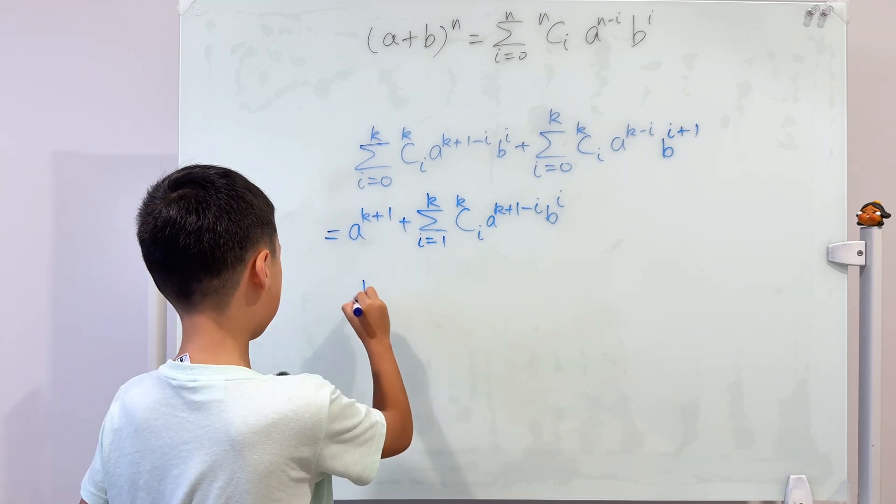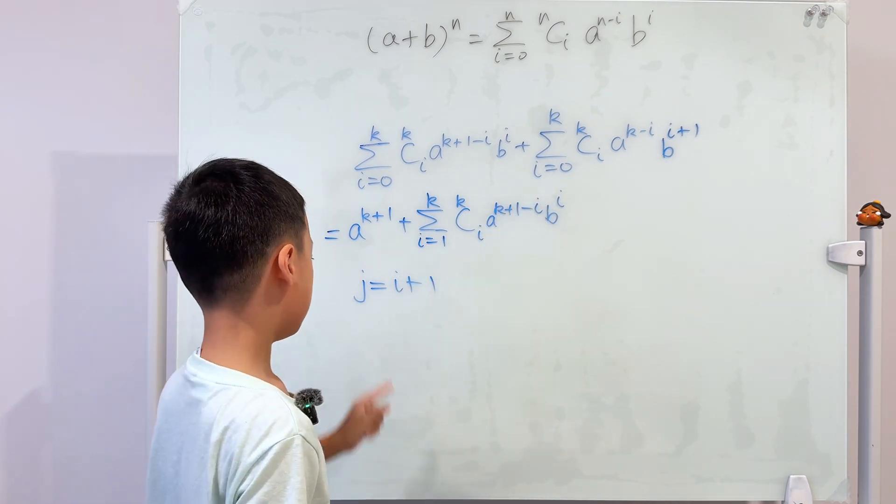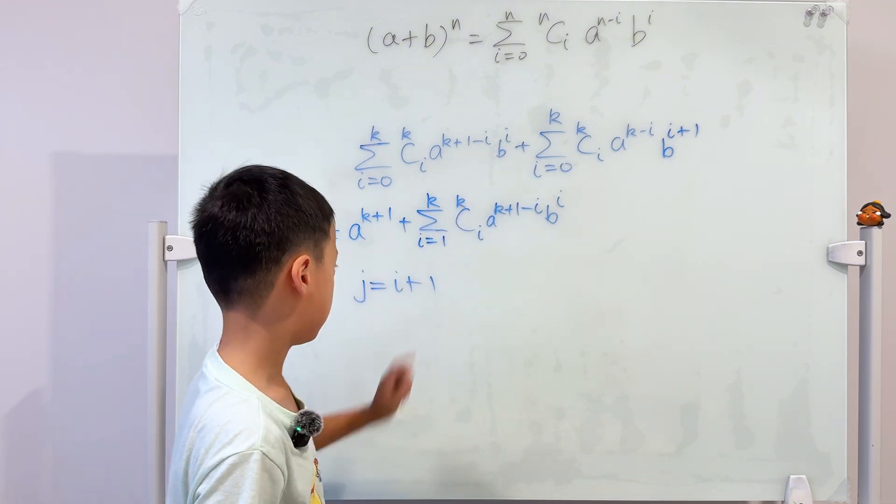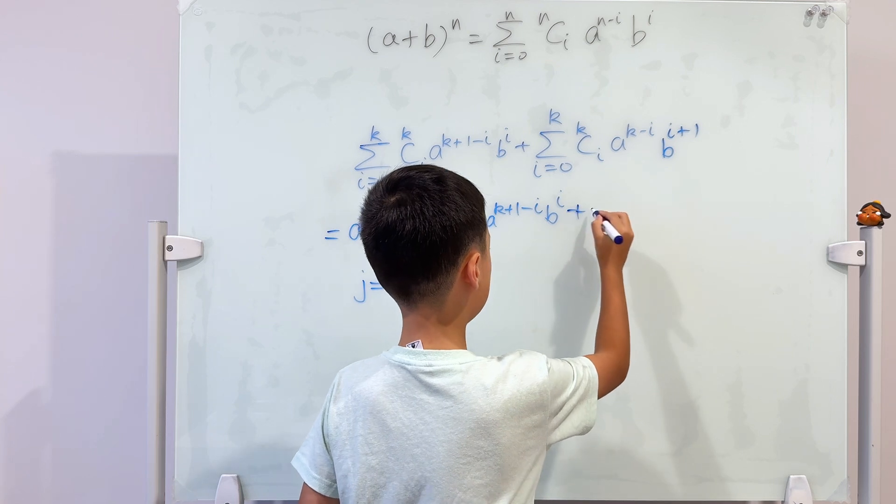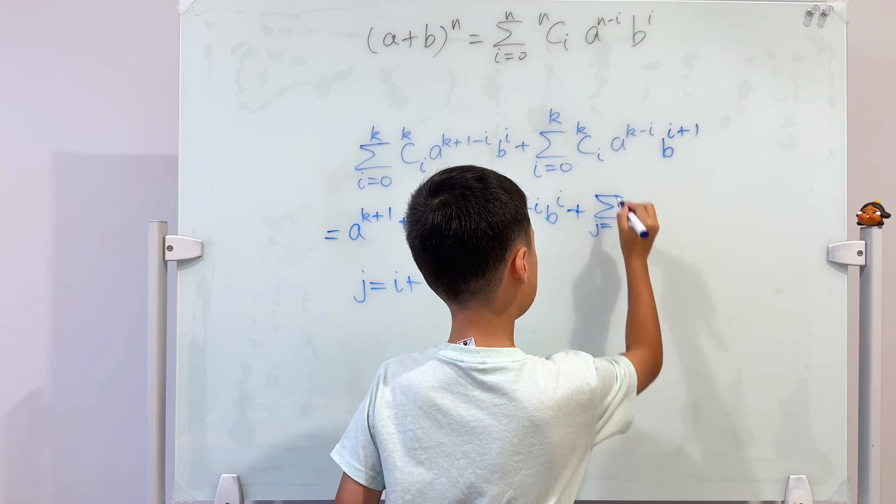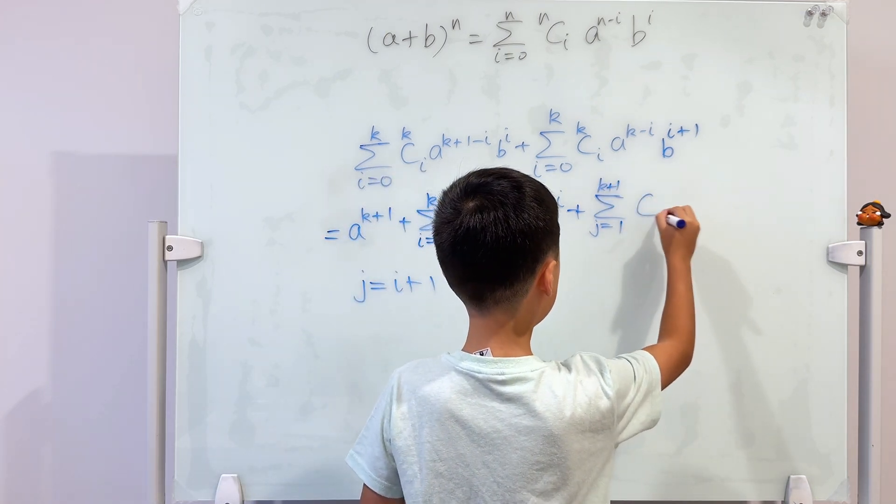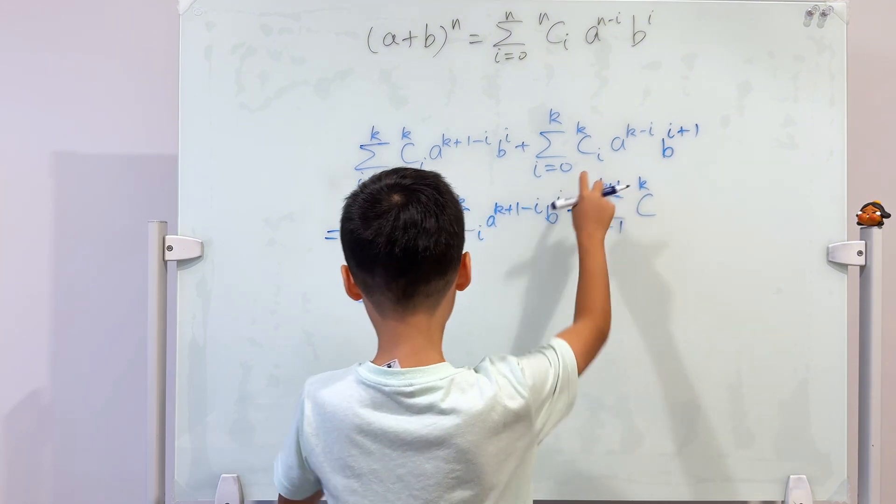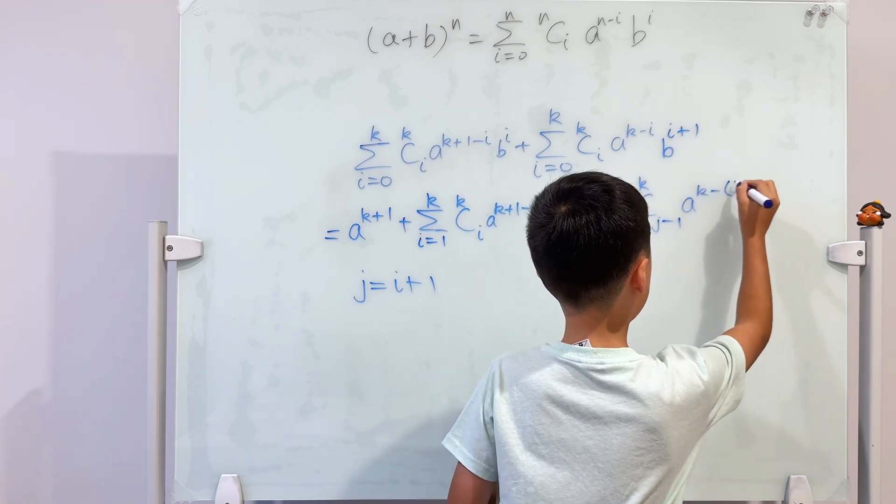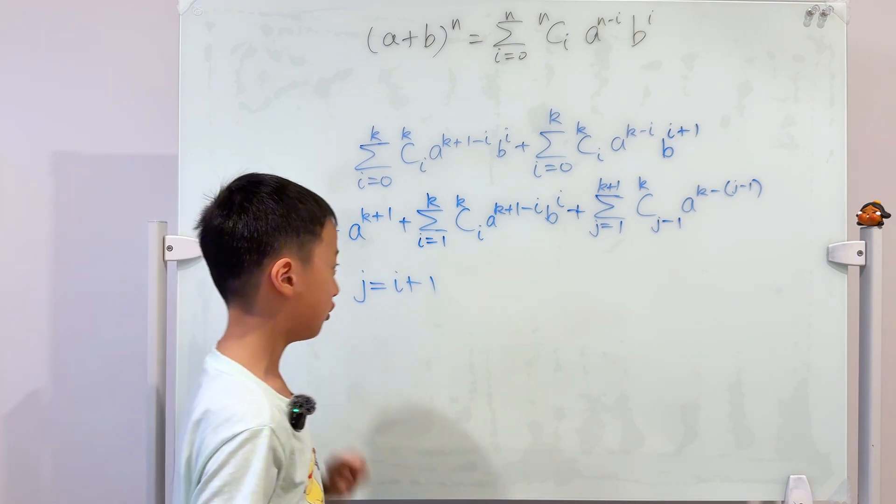So I'm going to let j equal to i plus one. If j equals i plus one, then when i equals zero, we know that j will equal to one. And when i is k, we know j will be k plus one. So then we can change it all to j. So then sum j is from one to k plus one. And then still c k, i is j minus one. And this will be b to the power of j since we let j equal to i plus one.